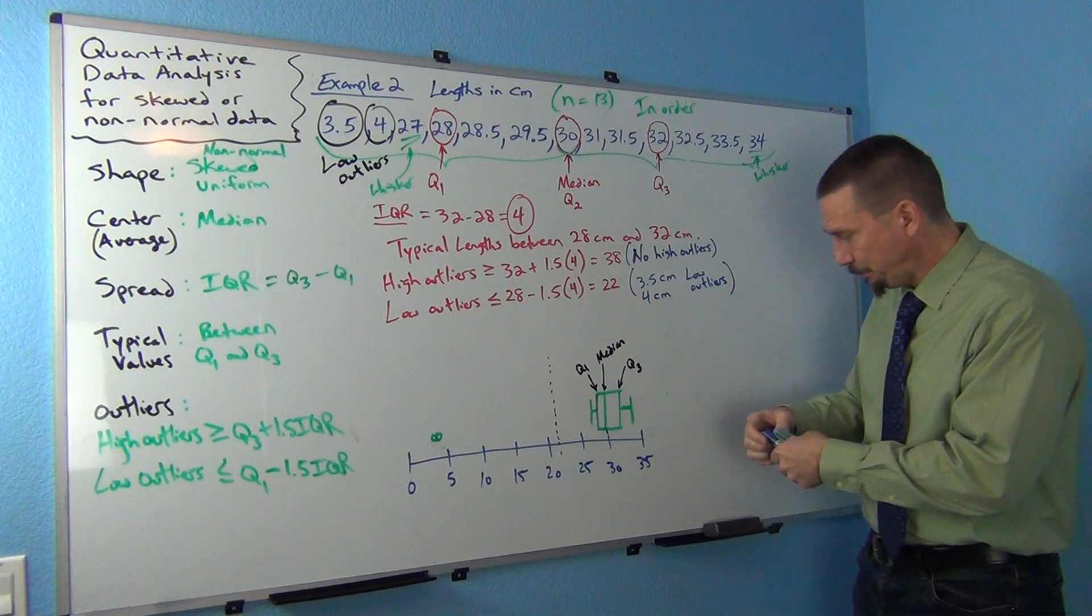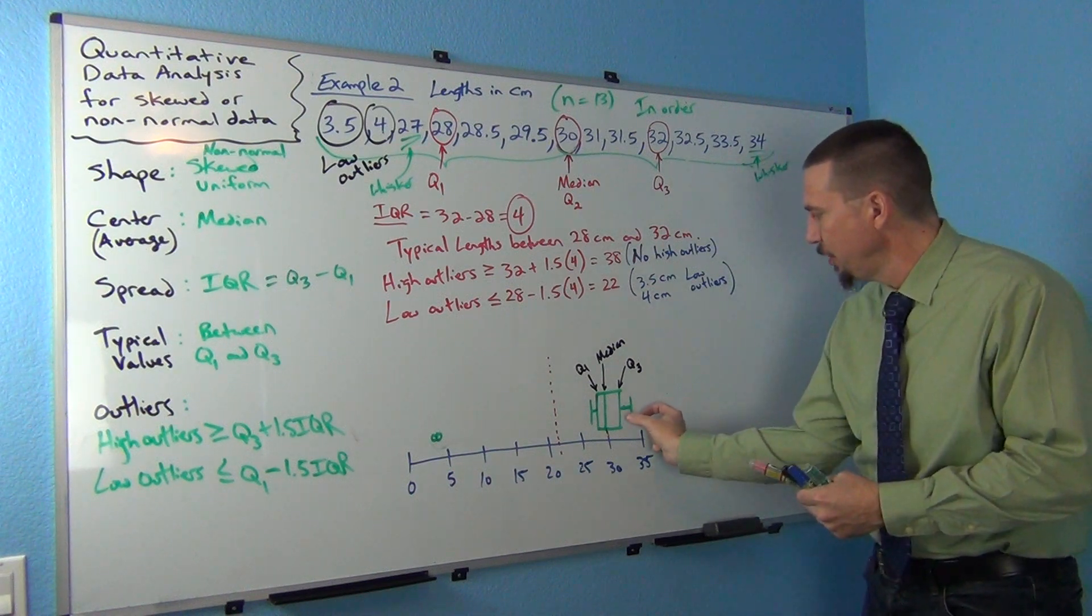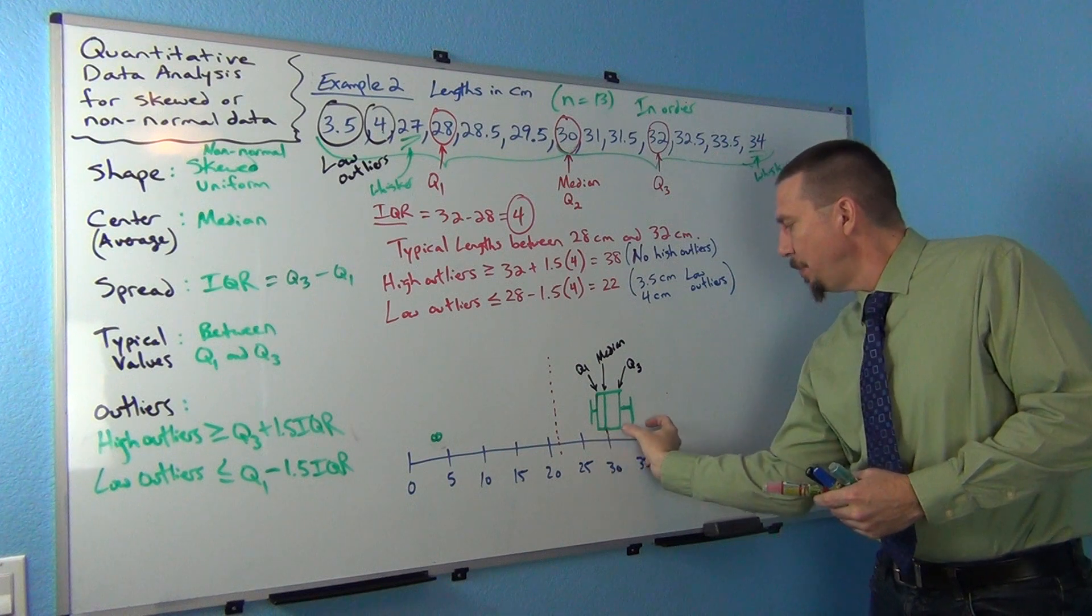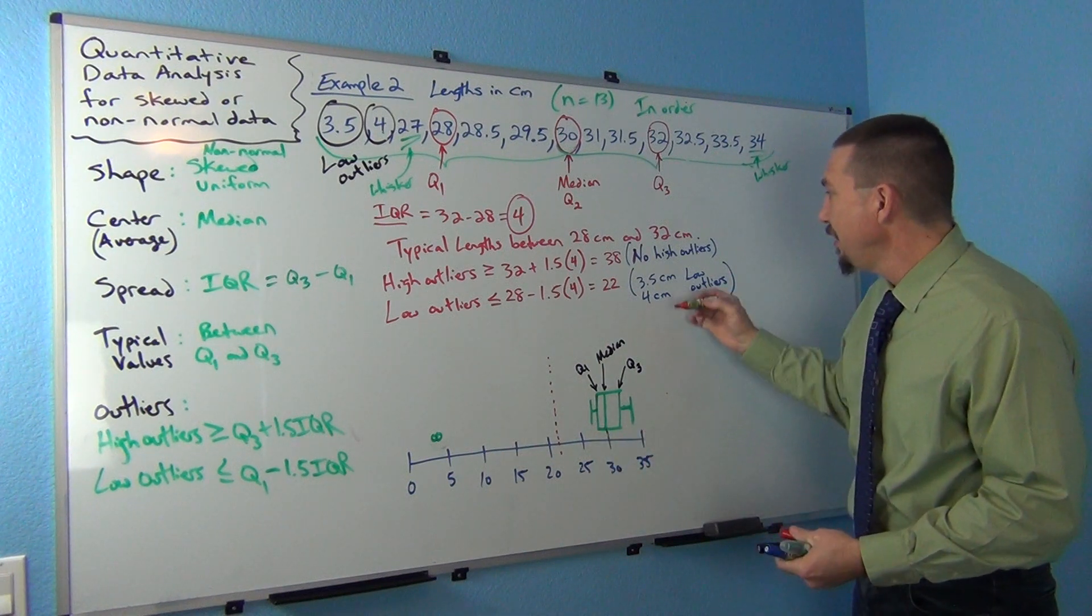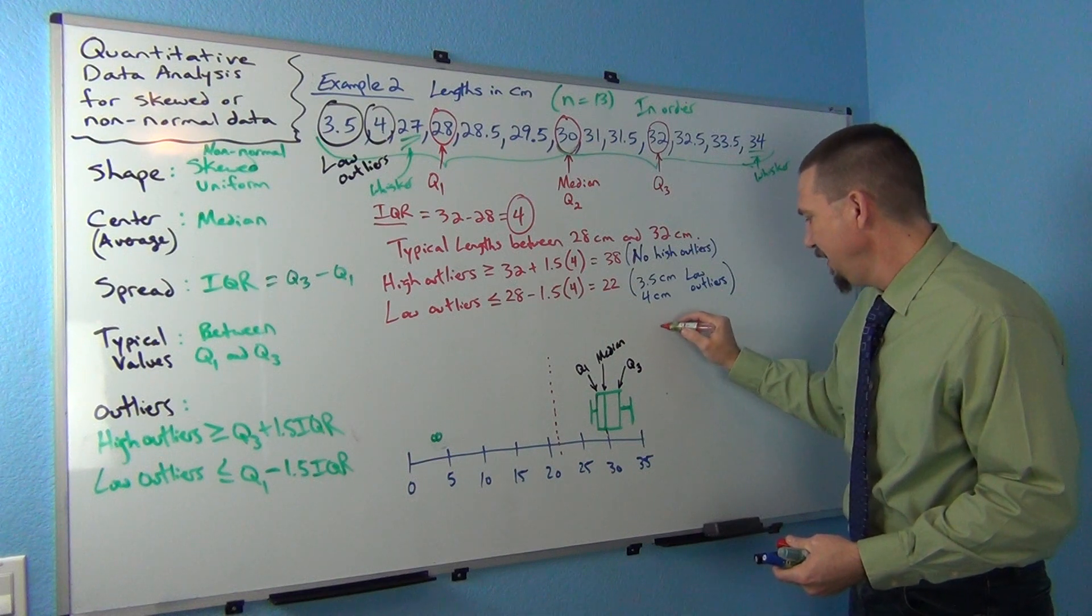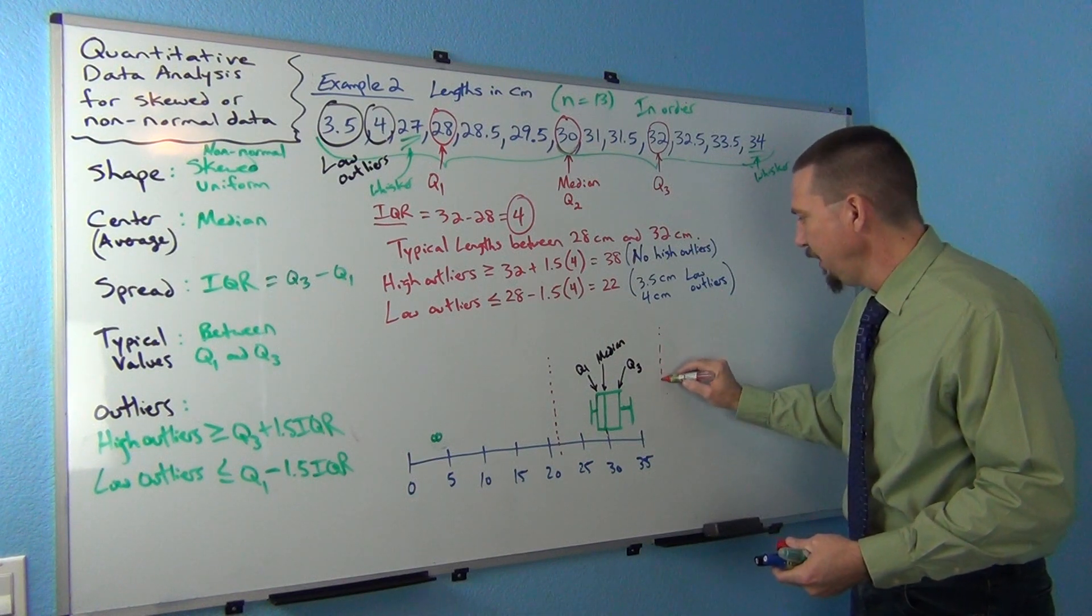A box and a half above, so if I go here's a box, box and a half, that's 1.5 IQR. It's at 38, so that's about right there.